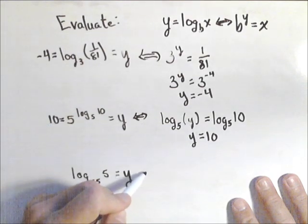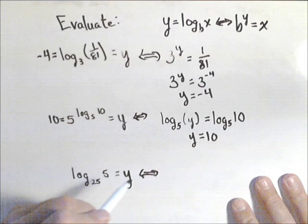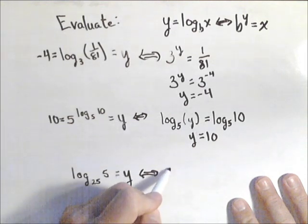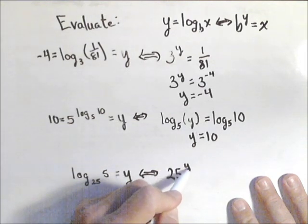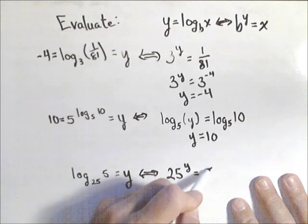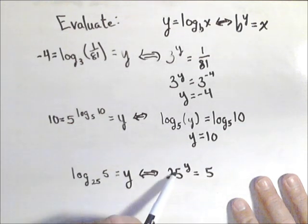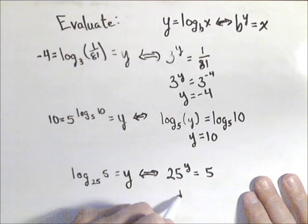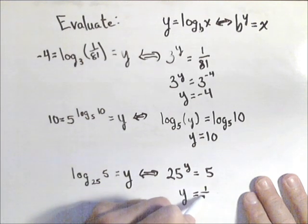For the last one, we'll rewrite it using our definition of log: 25 to the y equals 5. Well, 5 is the square root of 25, so in this case, y is going to have to be 1/2.